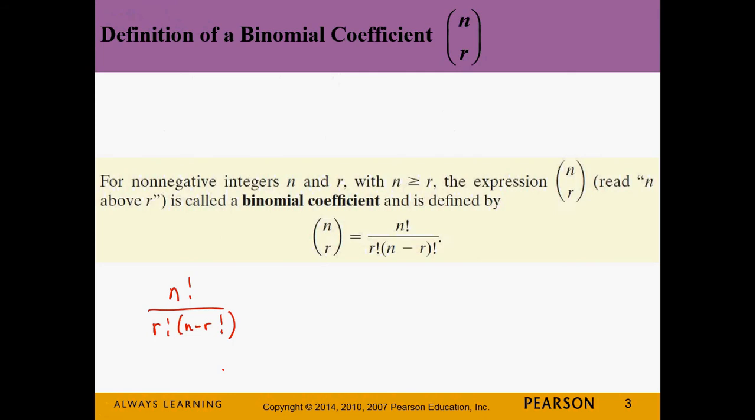What's a factorial? It's not factors — you just multiply this number times every positive integer less than n. So 3! = 3 × 2 × 1 = 6. And 6! = 6 × 5 × 4 × 3 × 2 × 1 = 720.